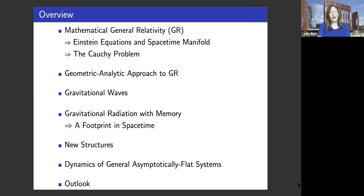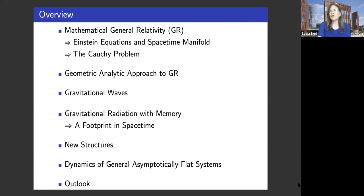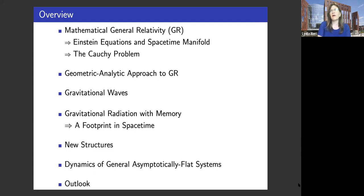In the last decades, geometric analysis has been really very successful in not only tackling some of the most important problems, but also actually solving really big questions in GR. Certainly one of the big breakthroughs on the observational side was the detection of gravitational waves in 2015 by LIGO. Since then, the LIGO-Virgo collaboration has detected many more events of gravitational waves from binary black hole and binary neutron star mergers.